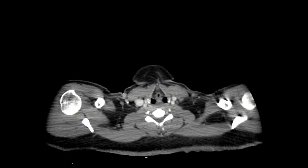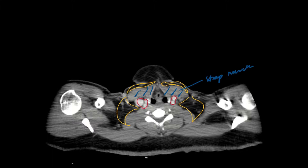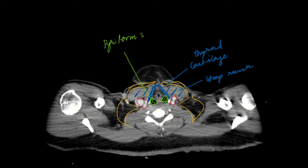Here you have the carotid space, then the posterior cervical space, and now the anterior cervical space. The strap muscles define this space. This is the thyroid cartilage. What you're seeing here — where fish bones and things get stuck — these are the piriform sinuses, two of them.